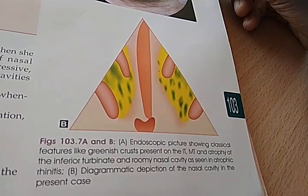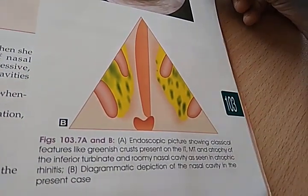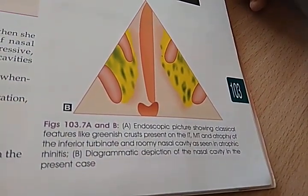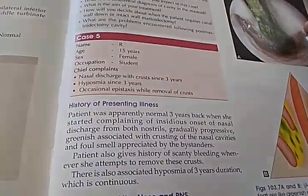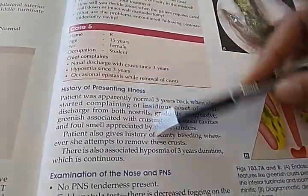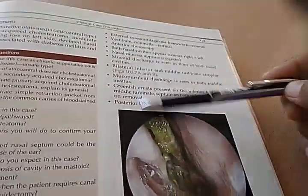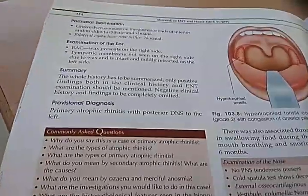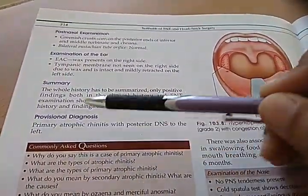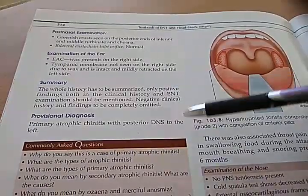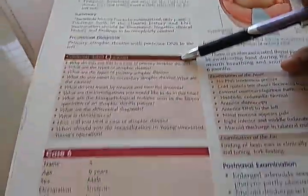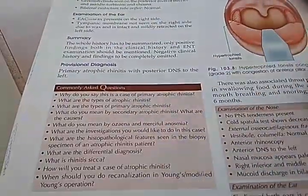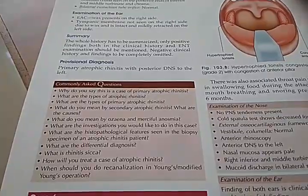What is this case? Endoscopic picture showing classical features of greenish crust — diagrammatic depiction of the nasal cavity in the present case. This is atrophic rhinitis. Provisional diagnosis: primary atrophic rhinitis with posterior deviated nasal septum to the left. Why do you say this is a case of primary atrophic rhinitis? They did not answer it — you have to answer it yourself. What are the types of atrophic rhinitis, etc.?